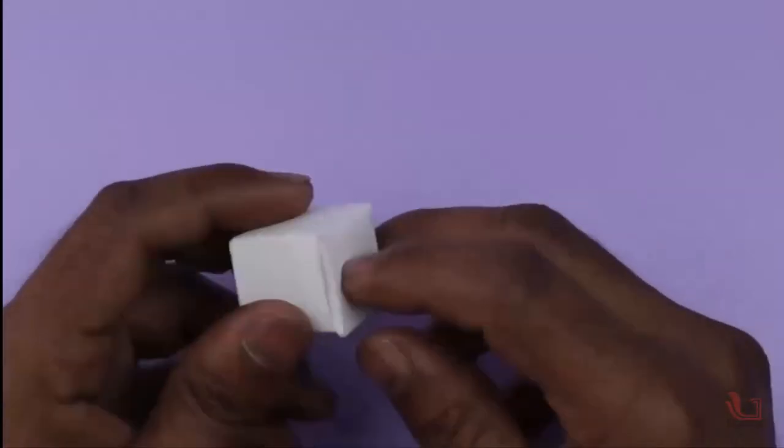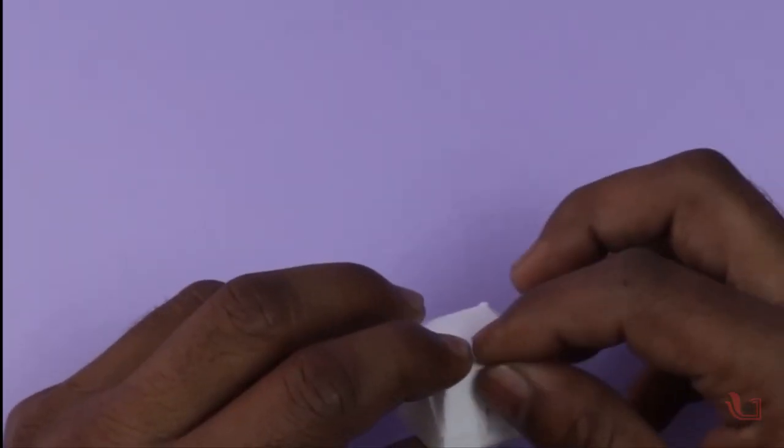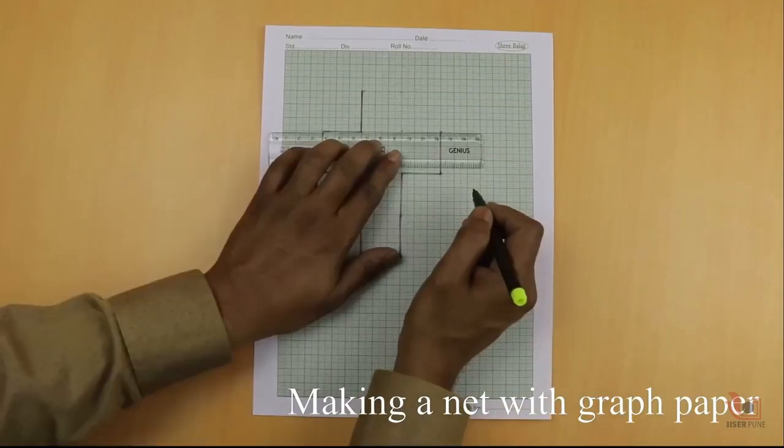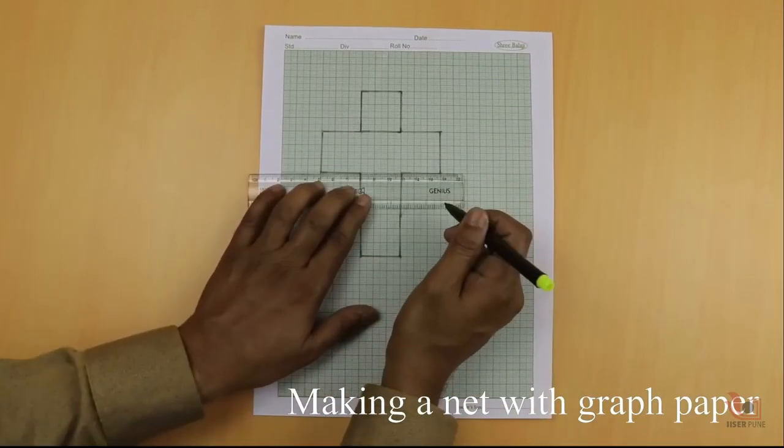Here our 3D shape is ready from the 2D net pattern. You can also draw patterns on graph paper making a net with a square shape.